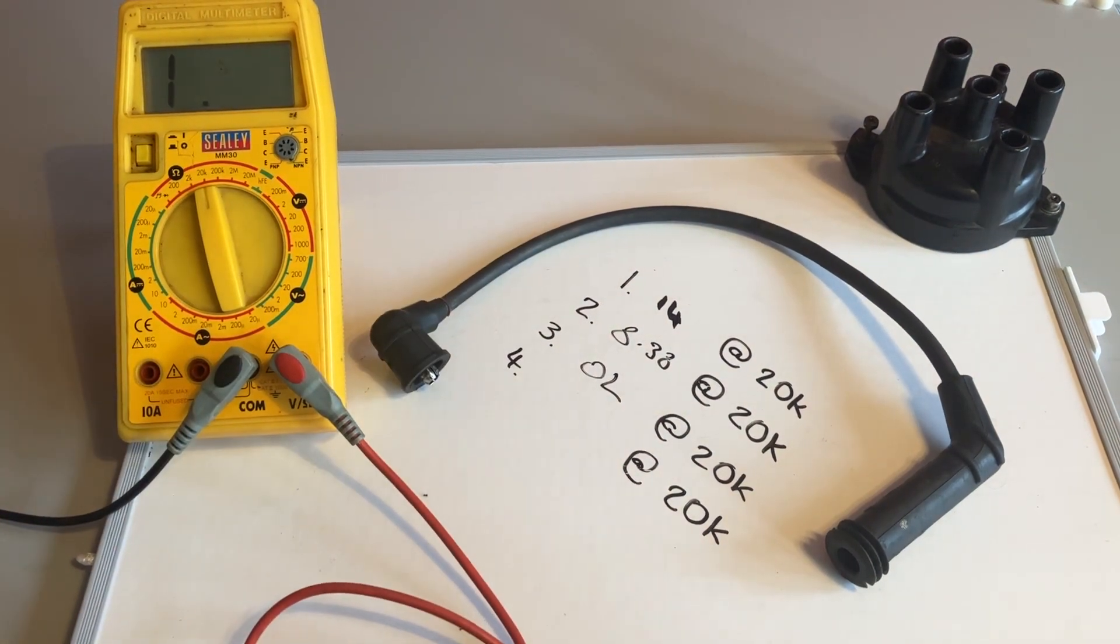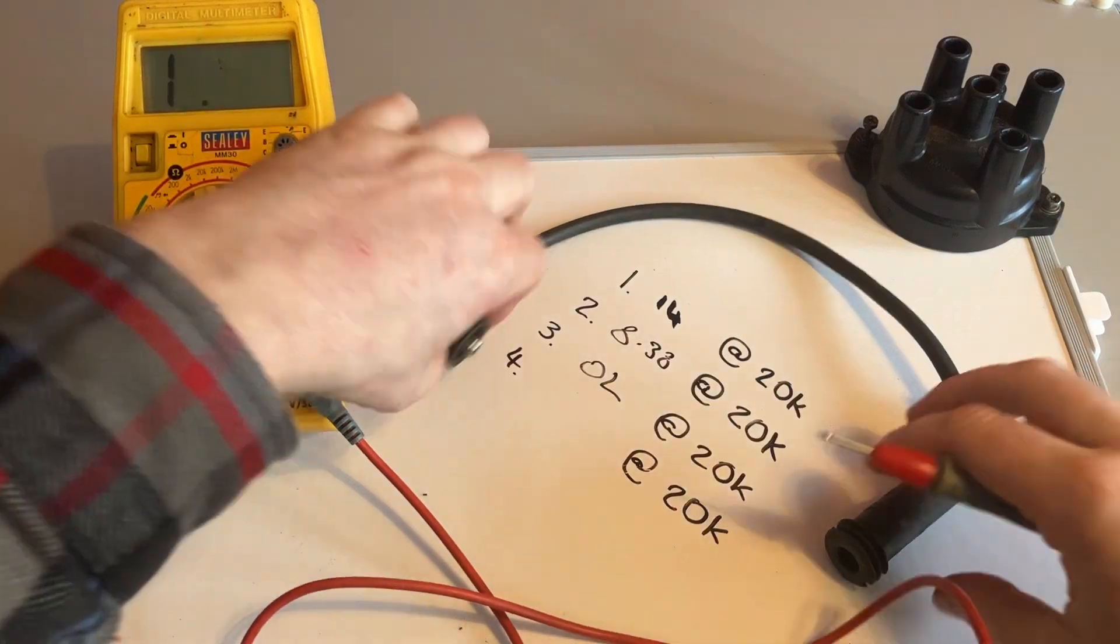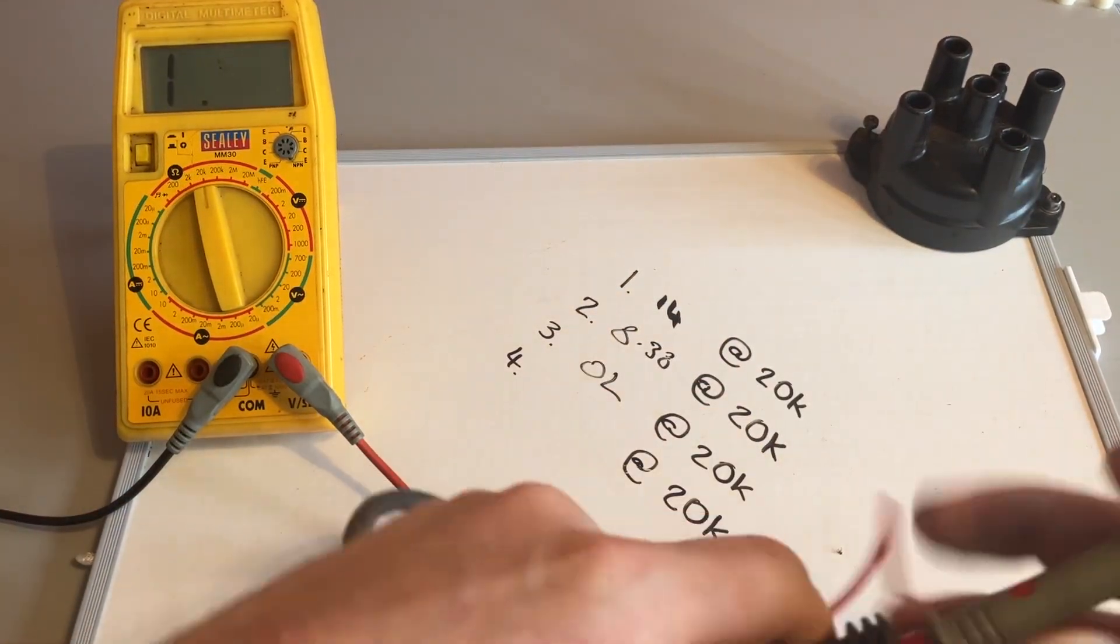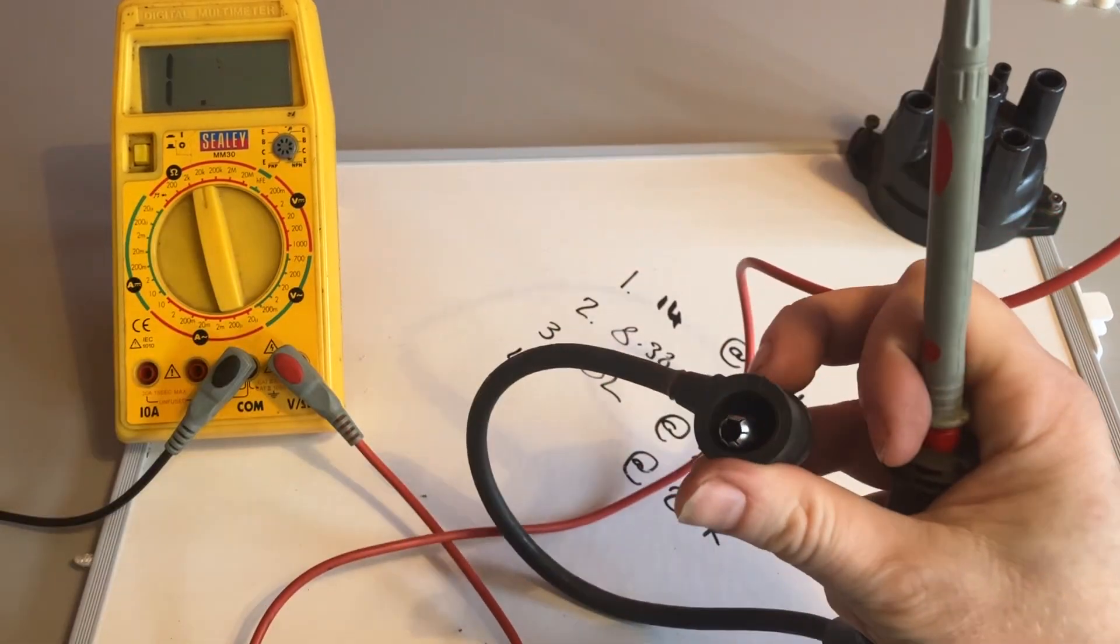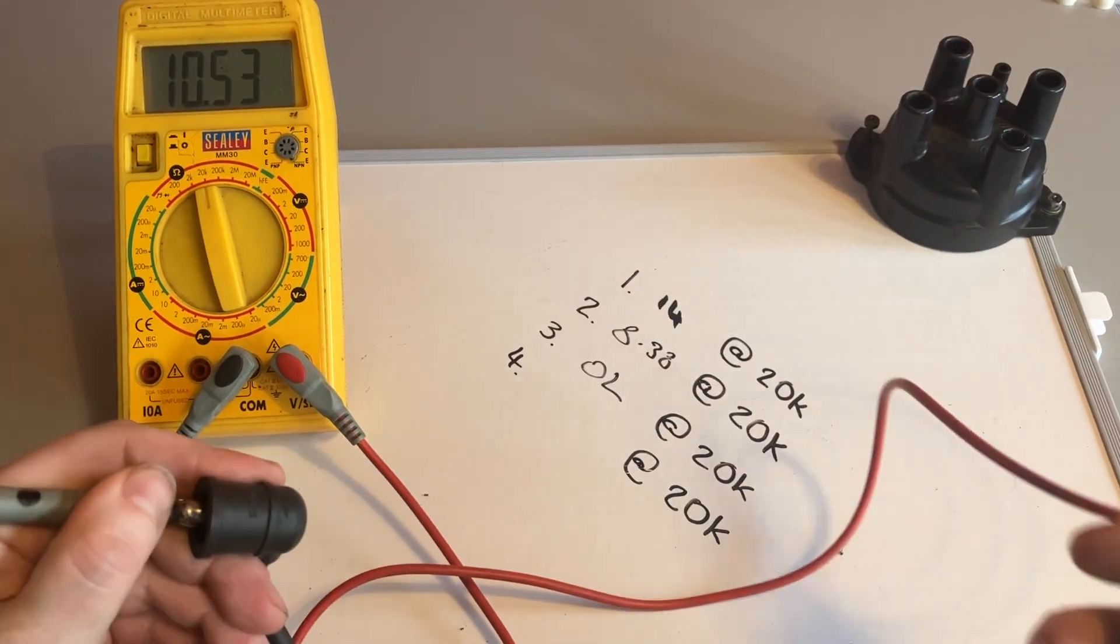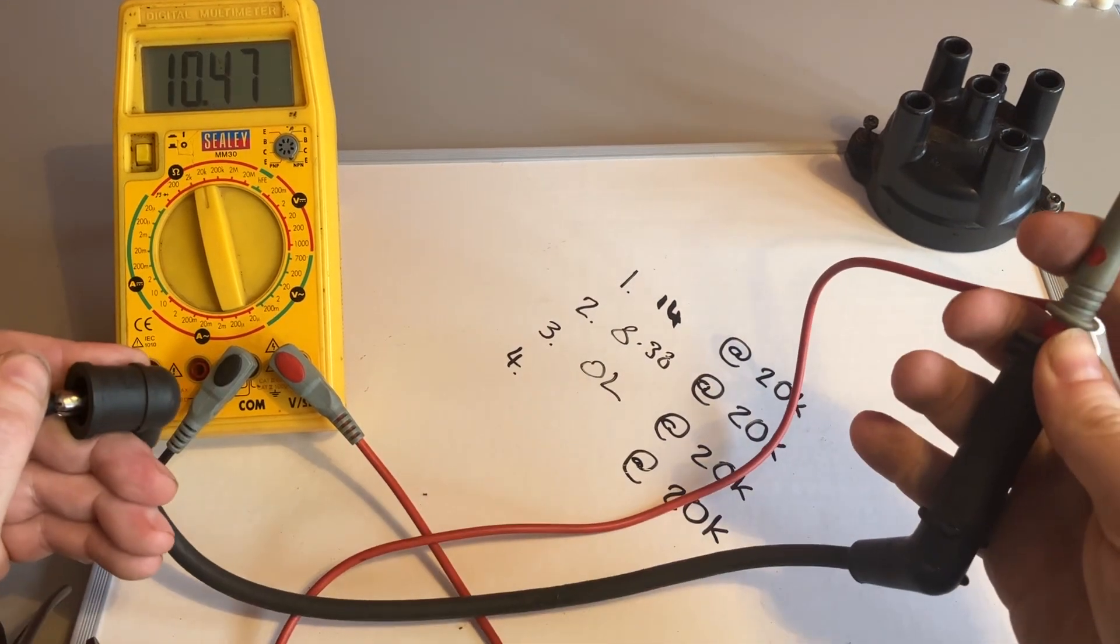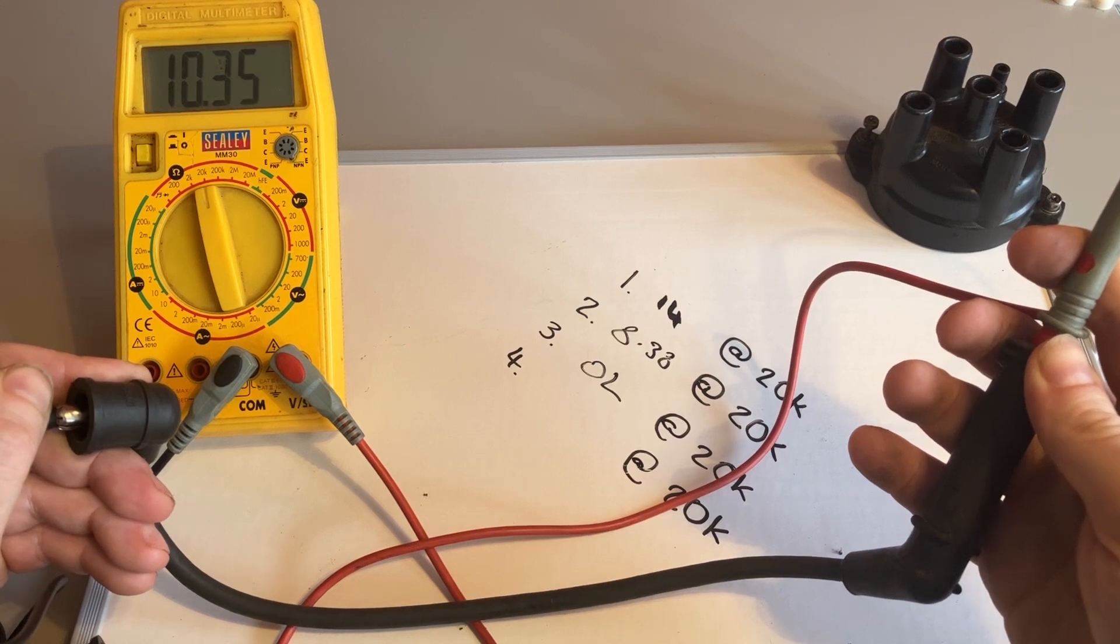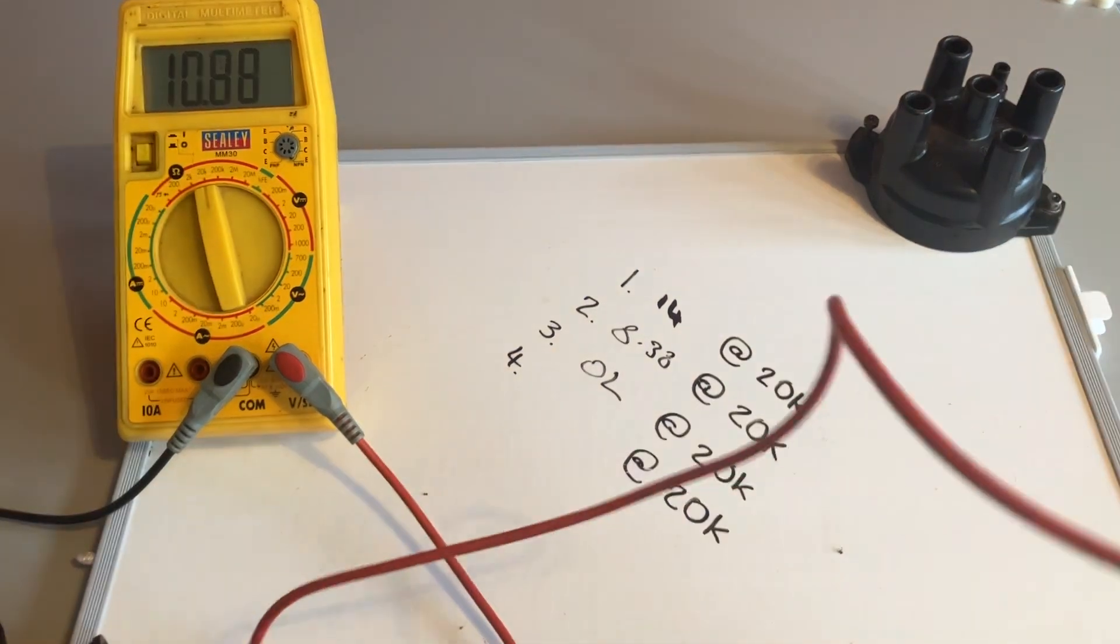And then the last one, let's have a look. So I've got one in there, one in there. I'm getting the reading of, on the shortest lead, 10.35. We'll go with 10.35.